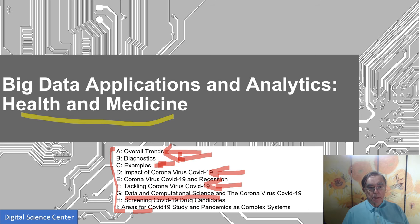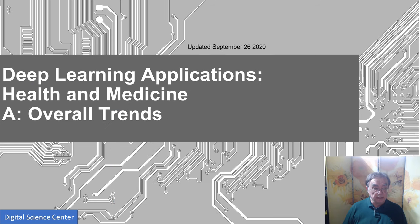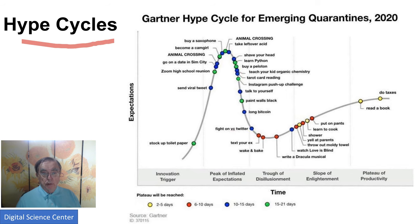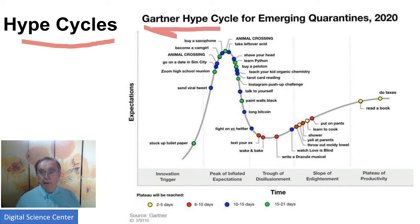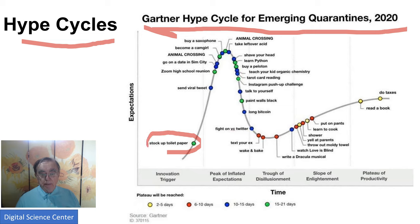Let's move on to the first lesson: overall trends. This is one out of nine lessons. We start off with two slightly offbeat hype cycles. The first is a vigorously frivolous one from Gartner itself — Emerging Quarantines 2020. Here we have the most innovative steps, stocking up on toilet paper, and the least innovative.